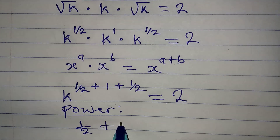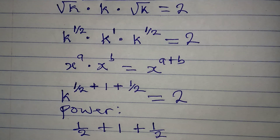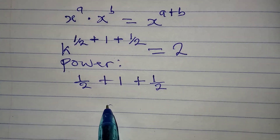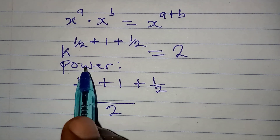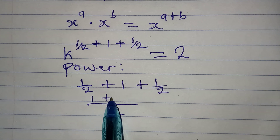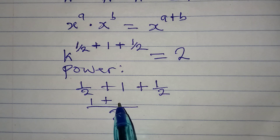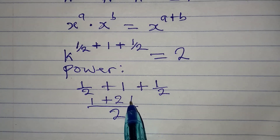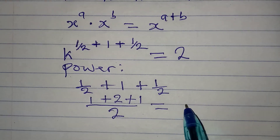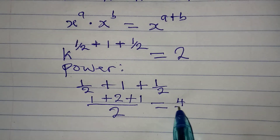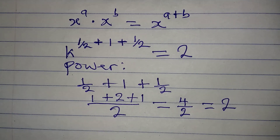The LCM of this is 2. So: 2 divided by 2 is 1, times 1 is 1; plus 2 divided by 2 is 1, times 2 is 2; plus 2 divided by 2 is 1, times 1 is 1. At the end of the day we have 4 over 2, which gives us 2. Therefore the power is 2.